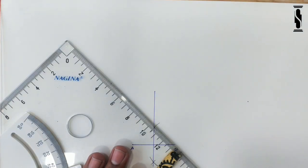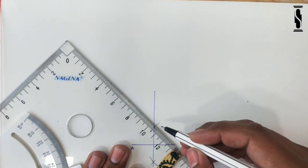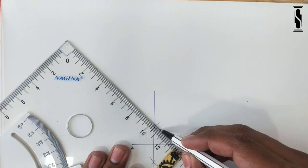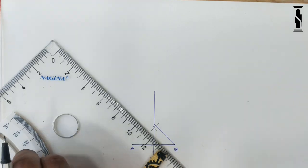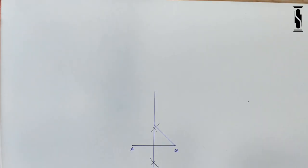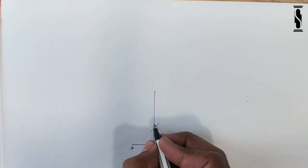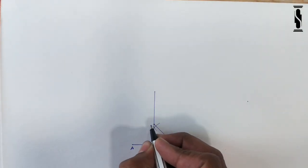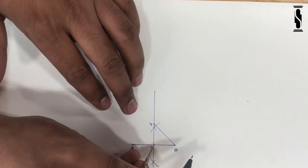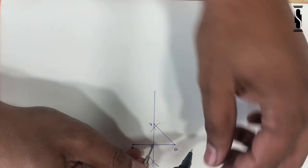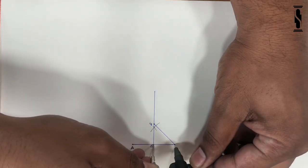From point B, draw a line on 45 degrees such that it will intersect the perpendicular bisector. Name this point as 4. Alternatively, you can mark point 4 by taking O as center and OB as radius.